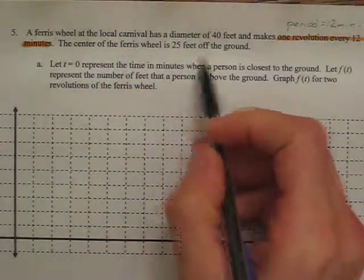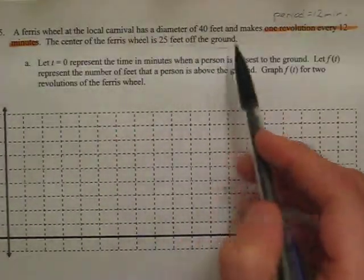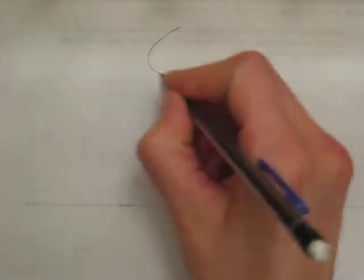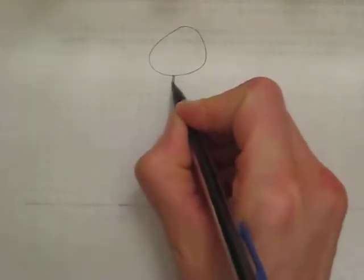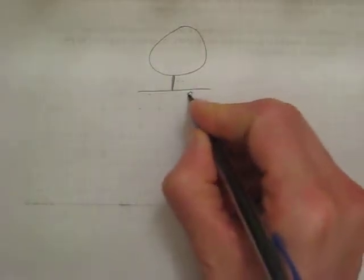The center of the ferris wheel is 25 feet off of the ground. What these two pieces of information tell us is part of the picture. If you turn it over and draw a picture of a ferris wheel, there's the ferris wheel, and the ferris wheel is going to be off the ground a little bit. So there's the ground.